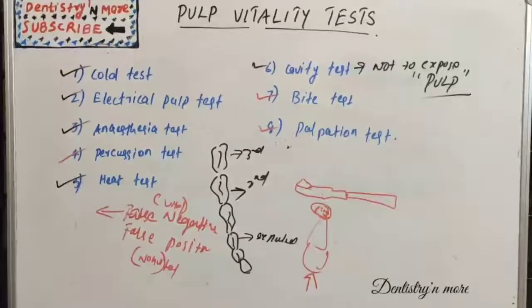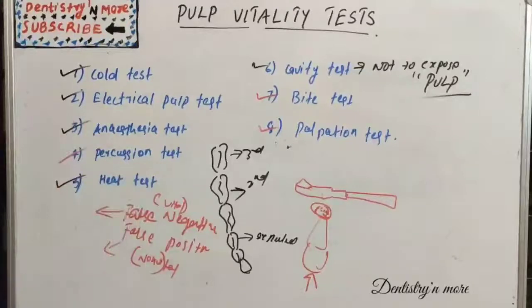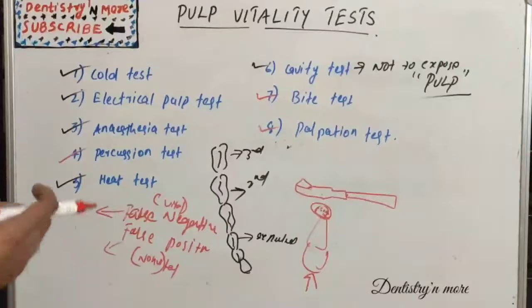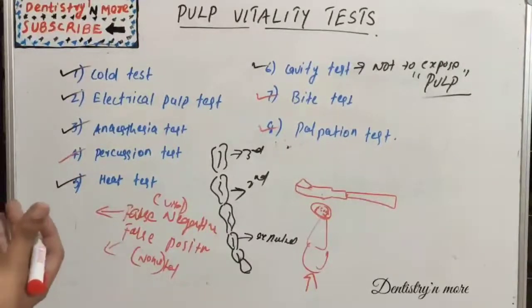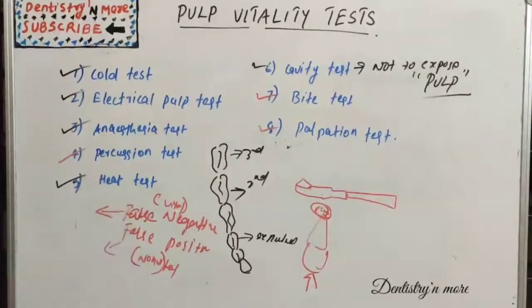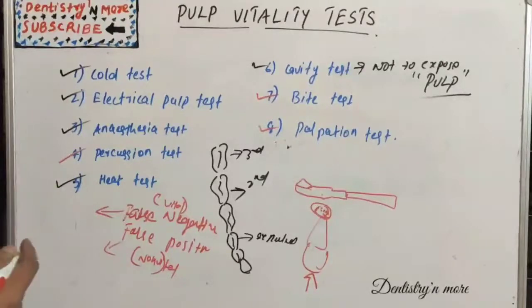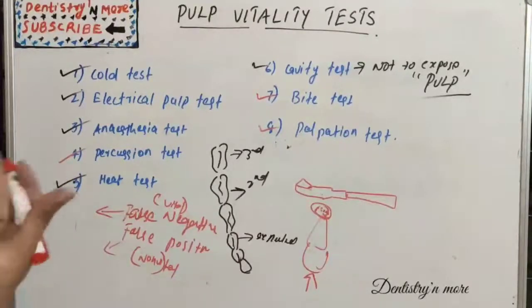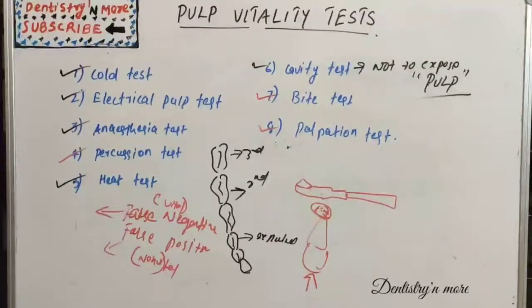Another cause of false negative is one necrotic canal in a multi-rooted tooth while other canals are vital. False positive results — where the test says vital but the tooth is non-vital — occur due to testing errors such as melting ice reaching an adjacent tooth or gingiva, electrical current conducting to an adjacent tooth, one vital canal in a multi-rooted tooth while others are necrotic, or liquefaction necrosis in the pulp conducting electricity during electric pulp testing.